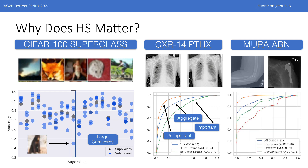We also look at a third task, normal versus abnormal extremity X-rays. We find that cases where there are very distinctive features, like hardware, are very easy to detect abnormalities on, while the model performs much worse on cases where there are more subtle findings, such as degenerative disease. Again, such stratification has important implications for clinical care. We should be hesitant about deploying models that have only been evaluated on aggregate metrics.